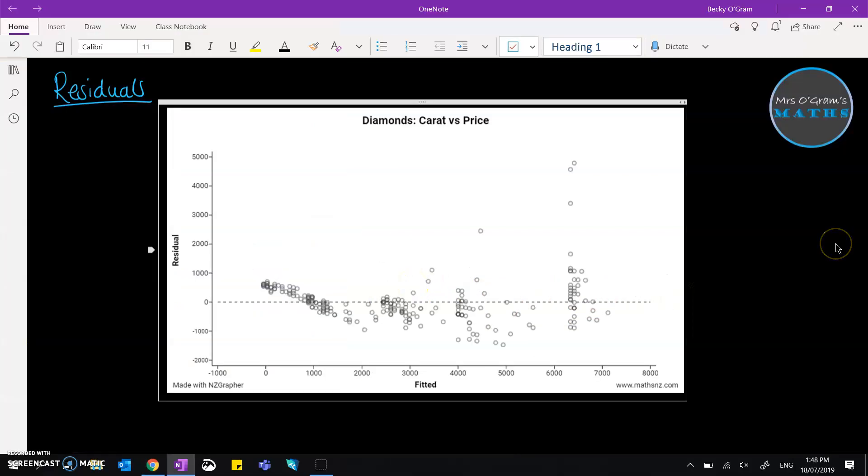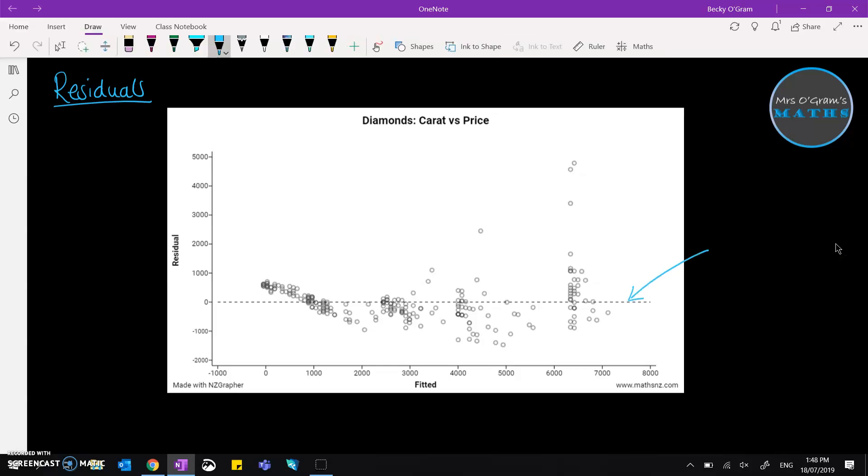I'm just going to bring that over here so we can mark it up a little bit and know what we're talking about. So this zero line here that we're talking about, that is the model, the curve or the line or whatever it is that you fitted.